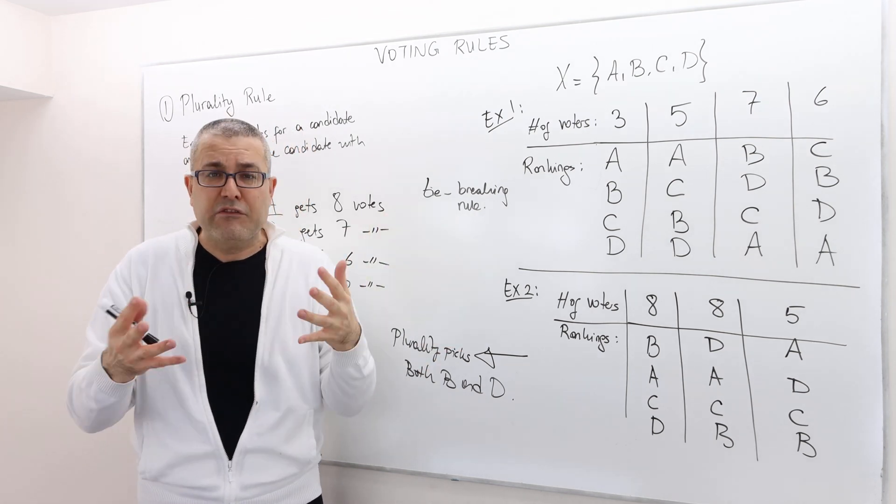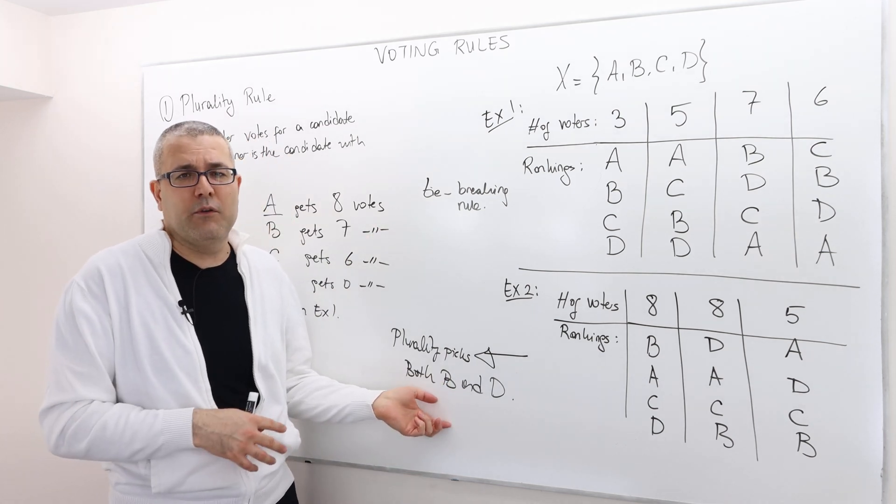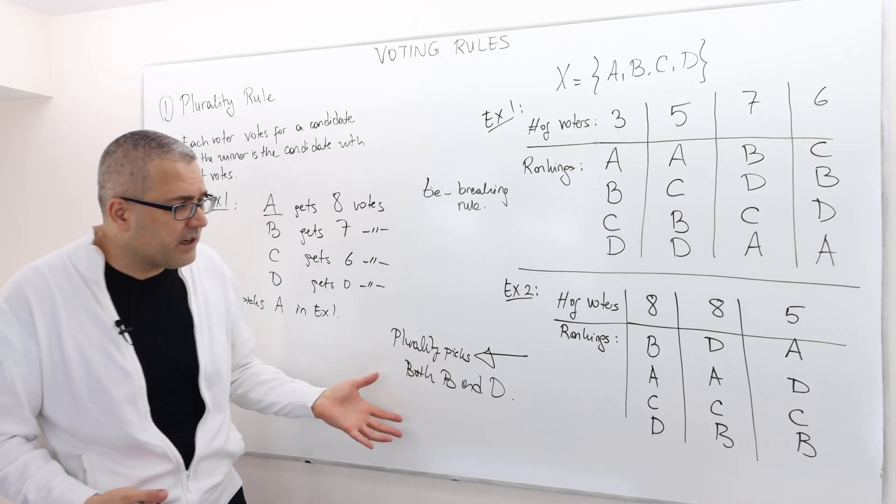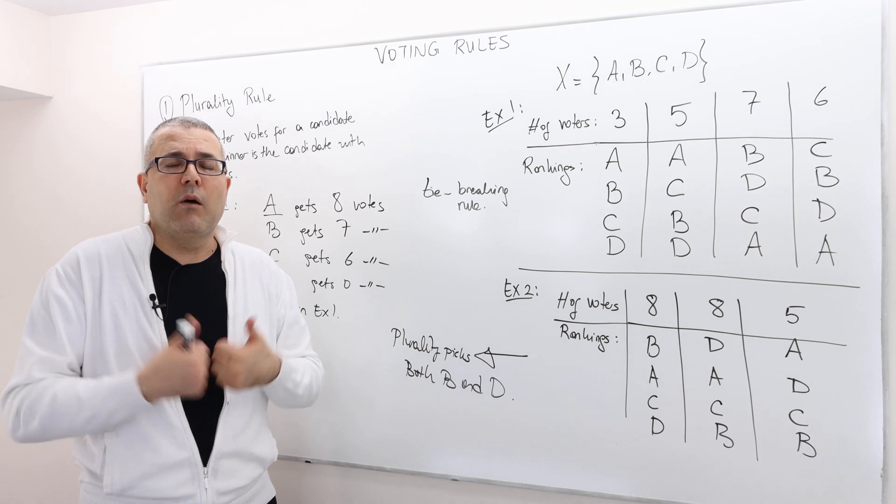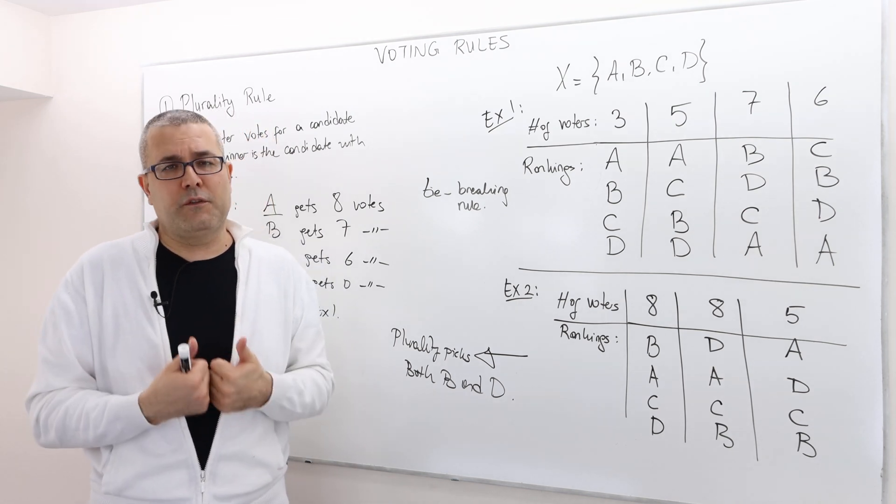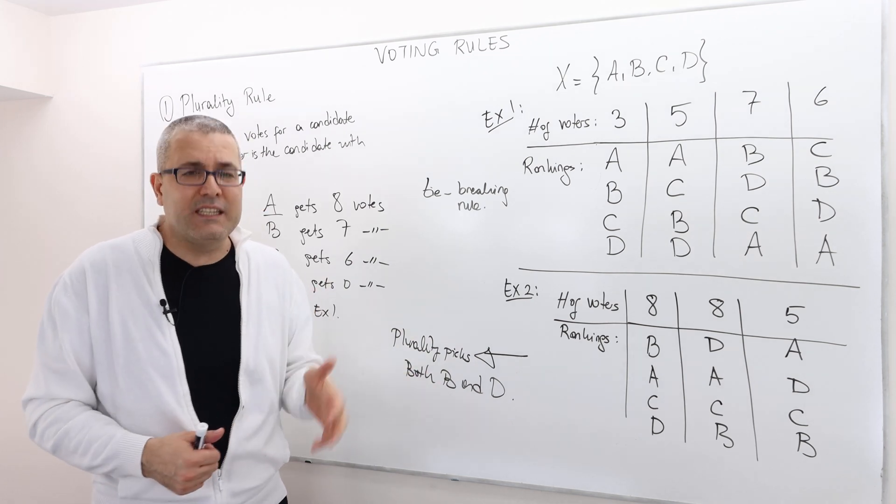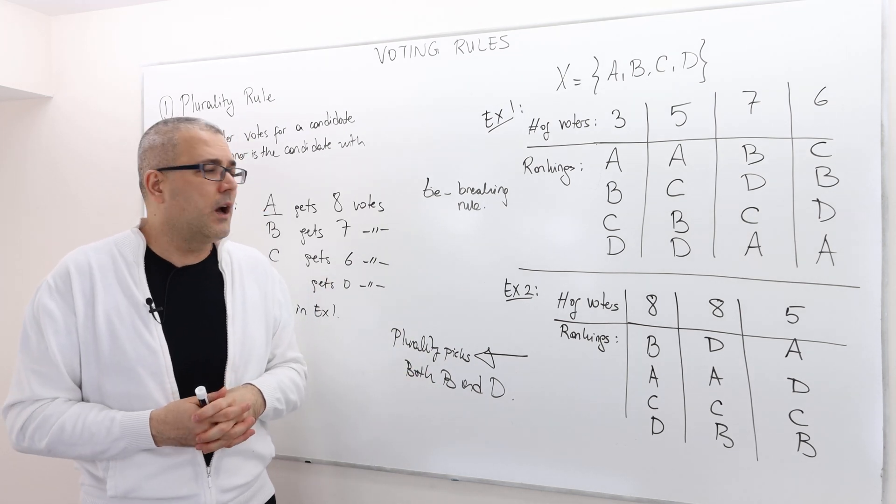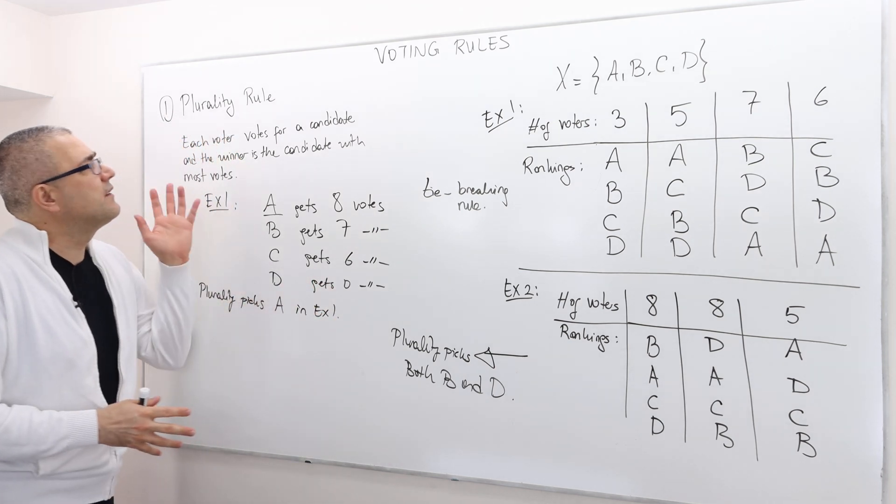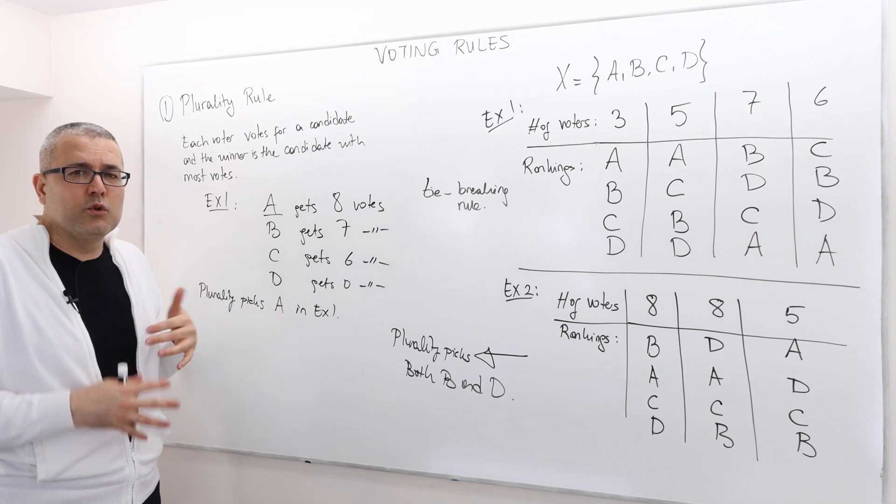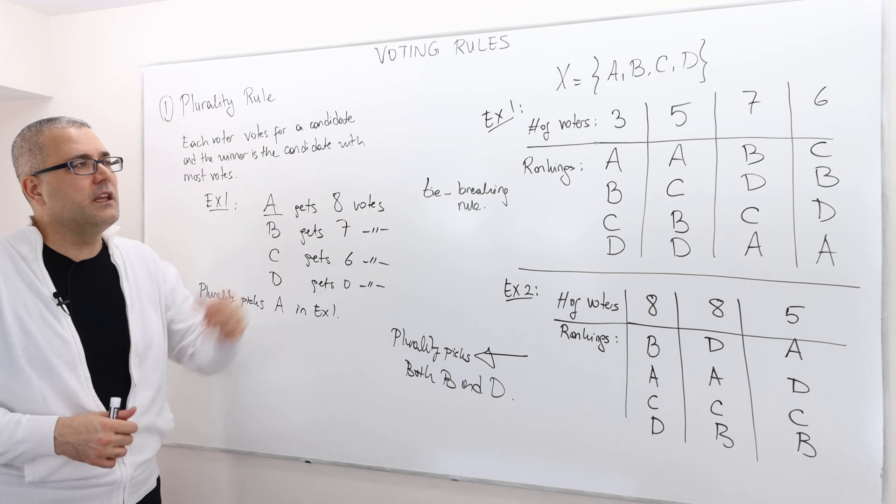But they, nevertheless, in reality, choose some tie-breaking rule in order to eliminate this type of outcome, because here, in this scenario, plurality picks both B and D. You have to use some sort of tie-breaking rule to determine which exact, I mean, is it B or is it D that is going to be the winning candidate. But nevertheless, this is exactly how plurality rule works, depending on the preference profile of the voters.